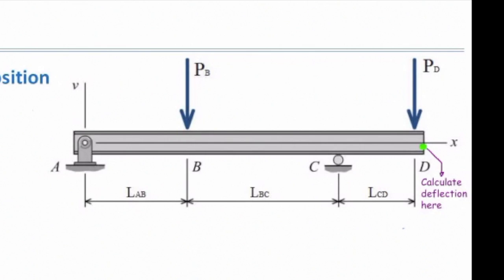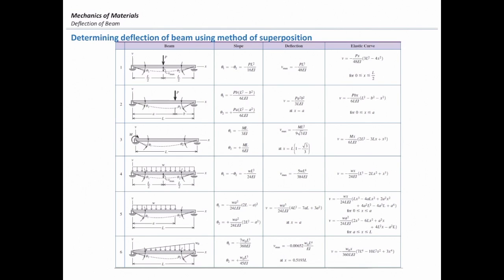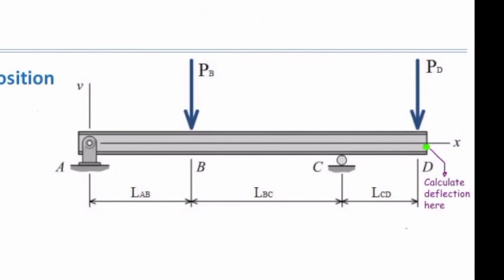Now let's consider this structure. This structure is not a simply supported beam because the roller support is not located at the right part of this beam. So if I want to determine deflection of this beam, say at point D, which is located on the right part, there is no similar figure in the table that I can go and pick up a value. This table shows deflection of cantilever beams, and this table shows deflection in simply supported beams, but this structure is not similar to those figures. So what can we do for this problem? How can we solve that? This is actually the topic of our study today.